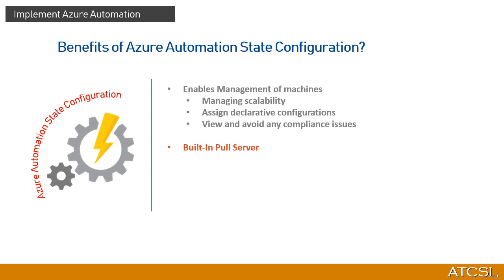The second benefit is the built-in pull server. Azure Automation State Configuration provides a DSC pull server, and target nodes are able to receive configurations and report their compliance status confirming their current state, which may or may not be a deviation from the desired state. The built-in pull server means we do not need to create our own, and we can target many different types of machines.